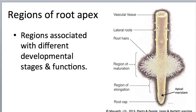You've seen this slide before. This is a diagram of the regions of a root apex. We talked about what each one of them does and where each is located. This is mostly a reminder that you do need to know this information. Starting at the very tip, we have the root cap, which is protective. We have the apical meristem, which is where new cells are added by the process of cell division.